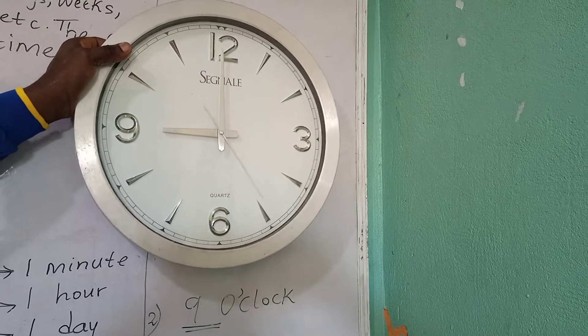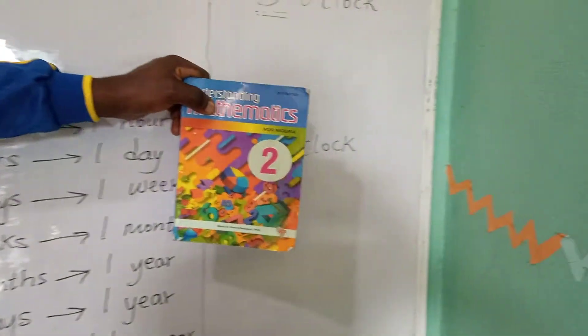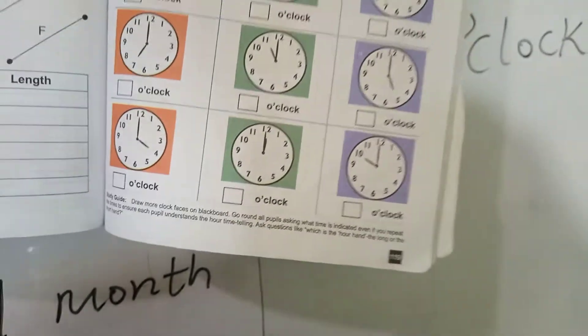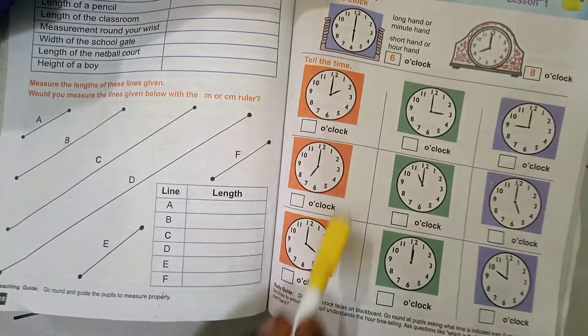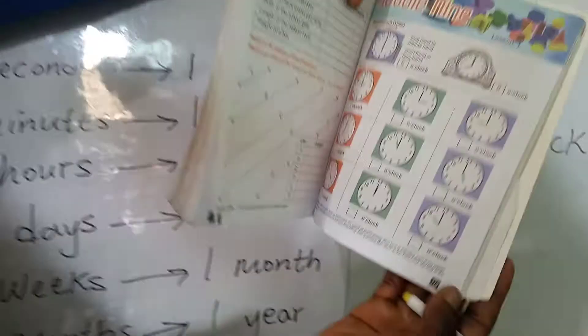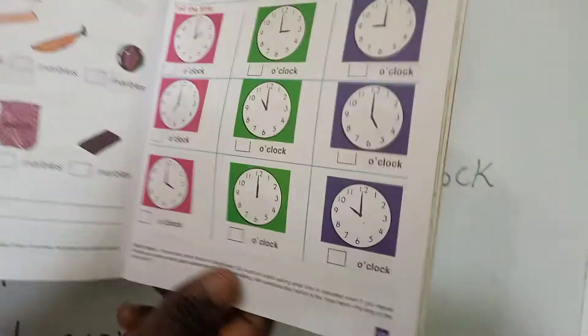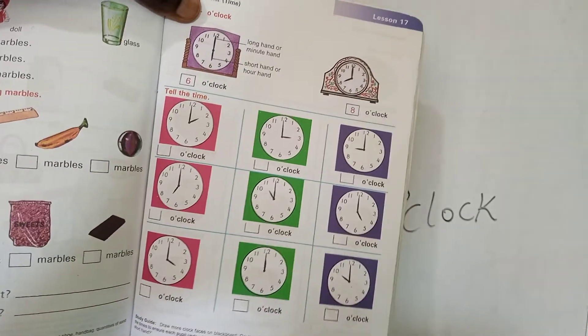Any questions? If there is no question, let's continue. For your exercise, those with the blue cover open to page 119 and write the time shown in all the clock boxes — exercises 1 through 9. Those with the brown cover open to page 133 and write the time you have seen there. Thank you very much and see you in the next class.